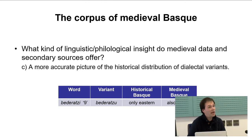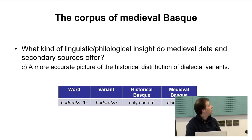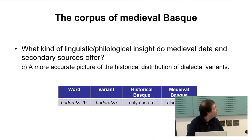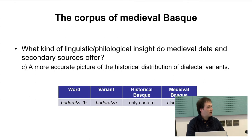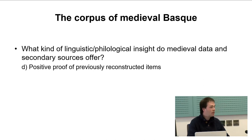We also have a more accurate picture of the historical distribution of dialectal variants, as exemplified by the word for 'nine'. The variant that up to now was only attested in eastern dialects is contrasted against the form accepted for standard Basque, which is 'bederatzi'. Now we have also found the 'bederatzi' variant in a central area — very far, in Basque terms, from its actual modern area in eastern Basque.